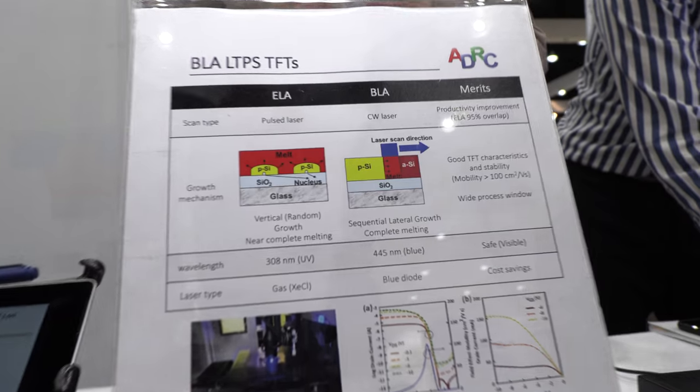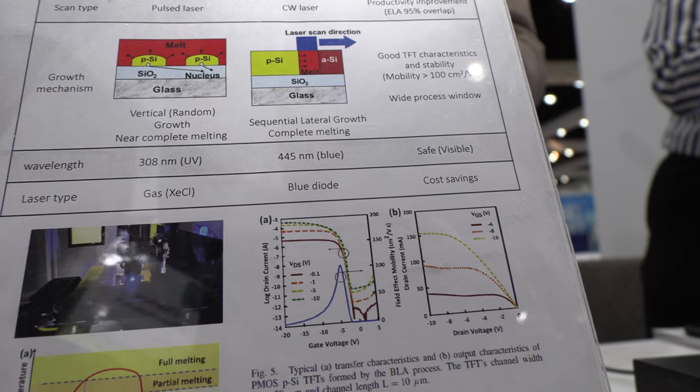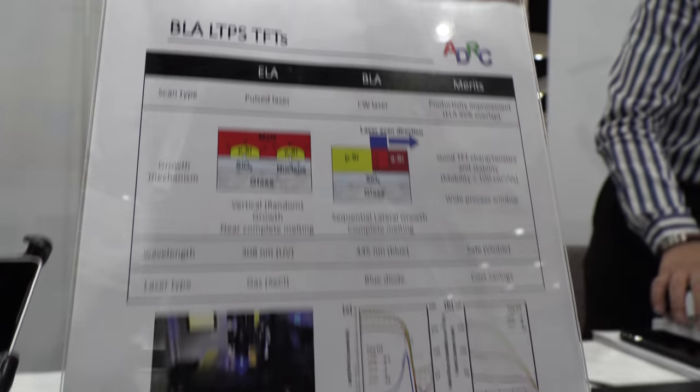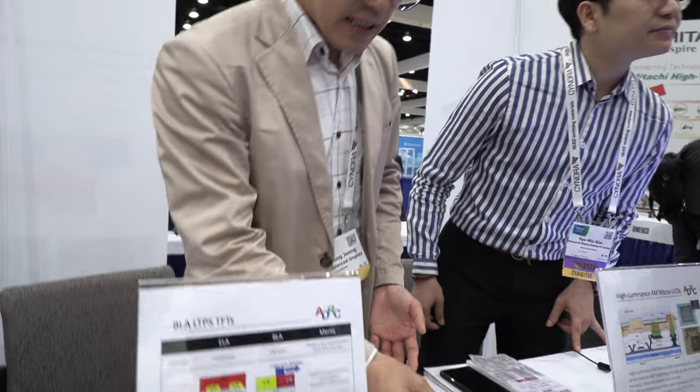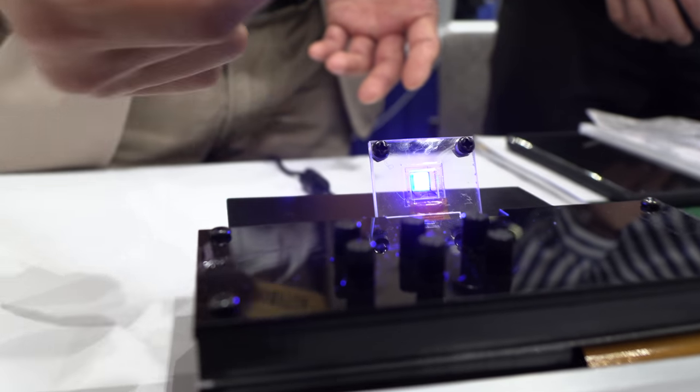This is a TFT using LTPS. LTPS thin film transistors can operate active matrices. Our goal is how to reduce the circuit — it's very useful for power consumption, and the active matrix can operate each pixel. It's a small micro-LED that can operate each pixel independently, with over 1,000 DPI.